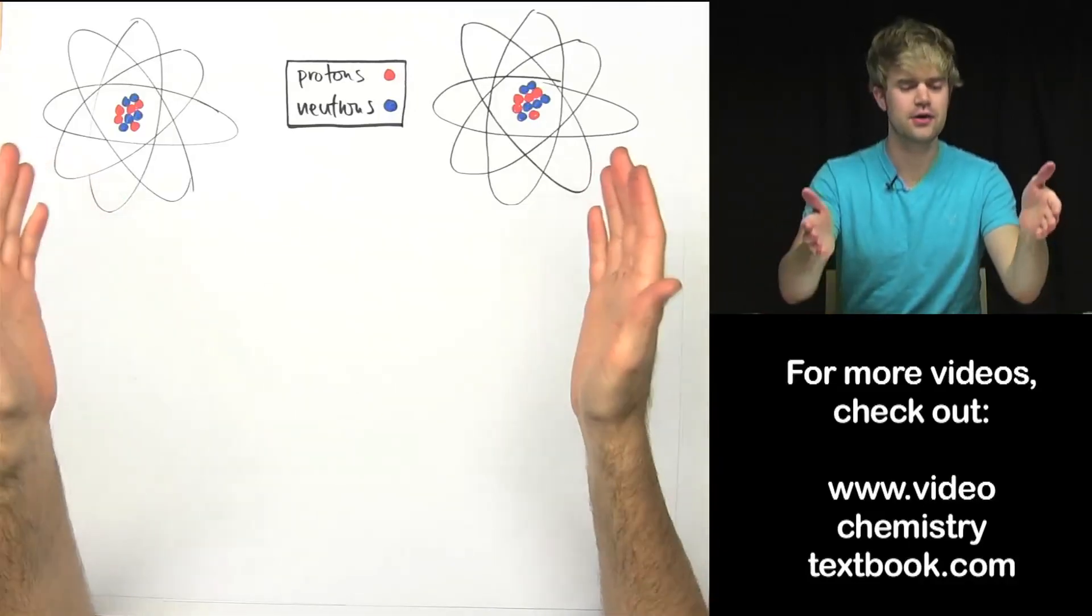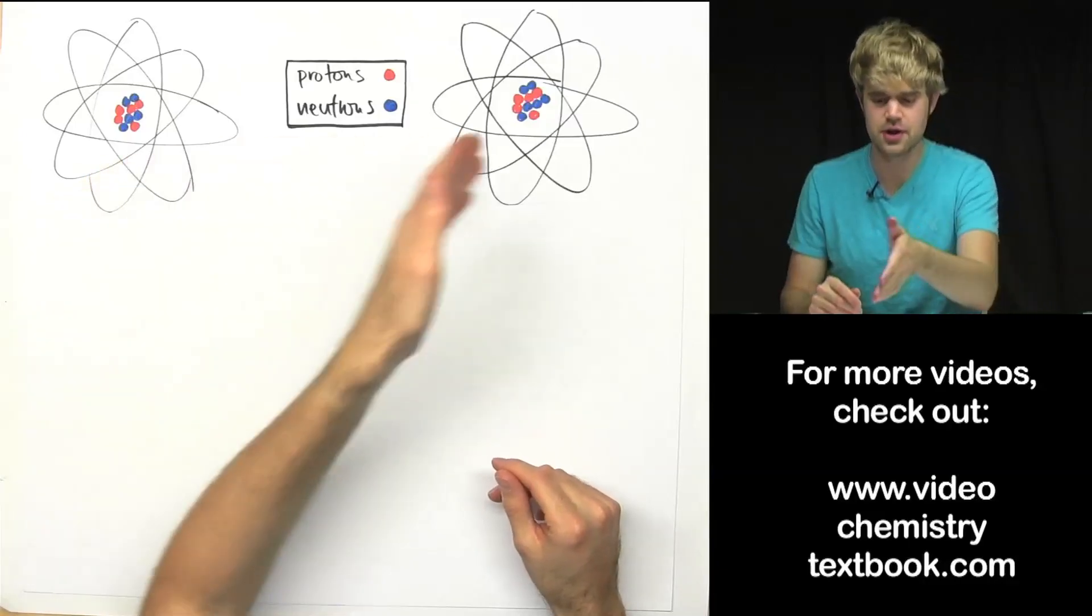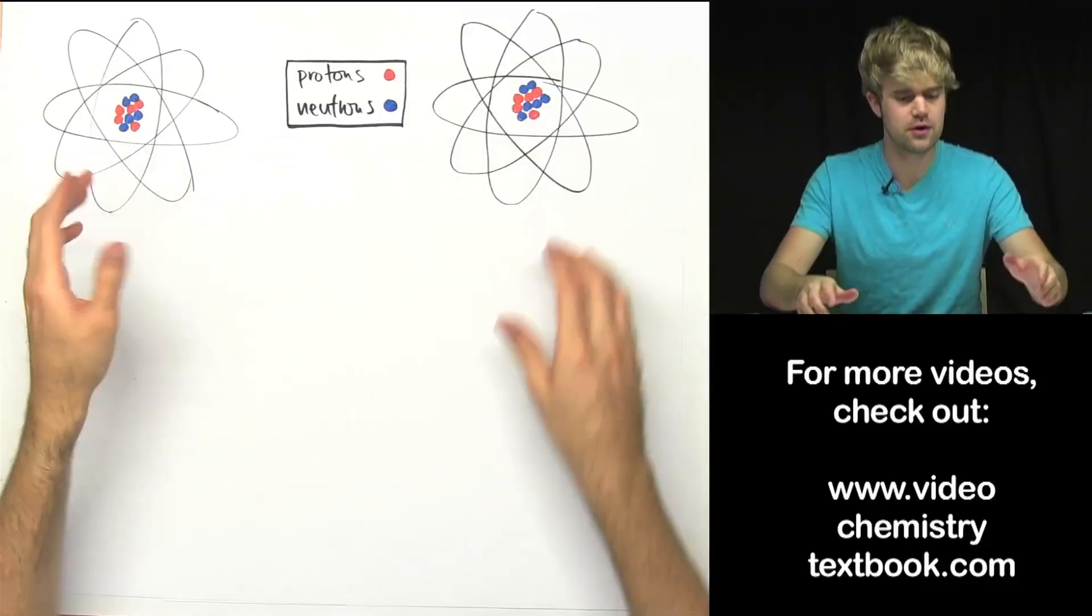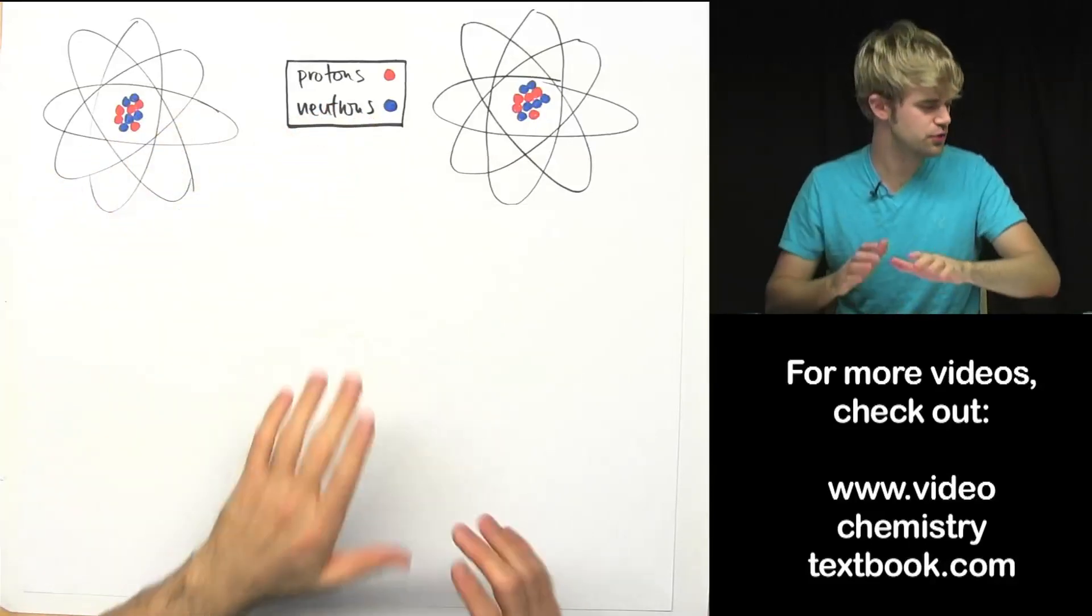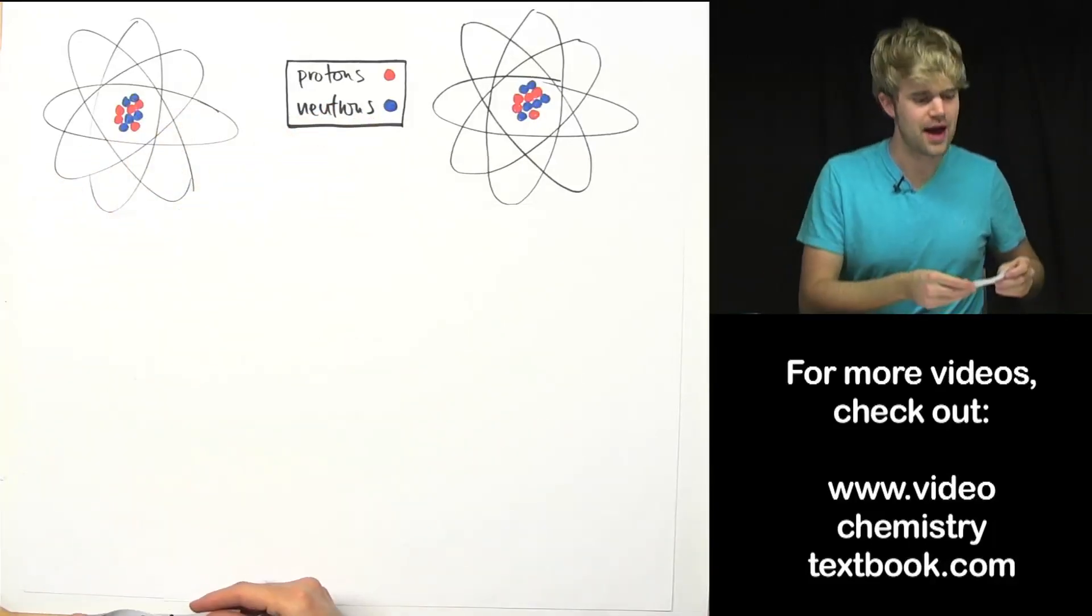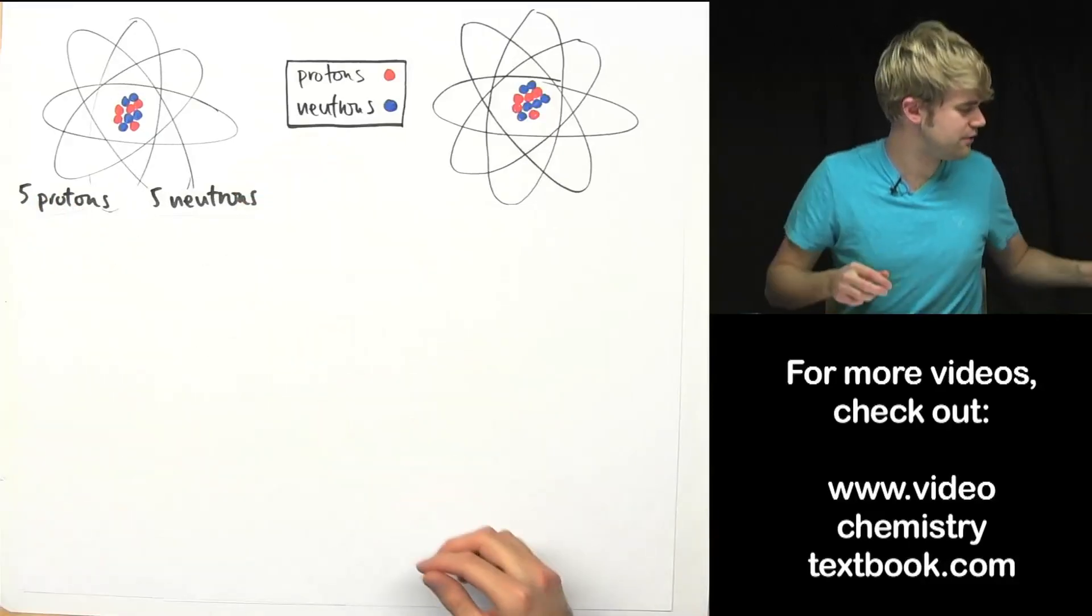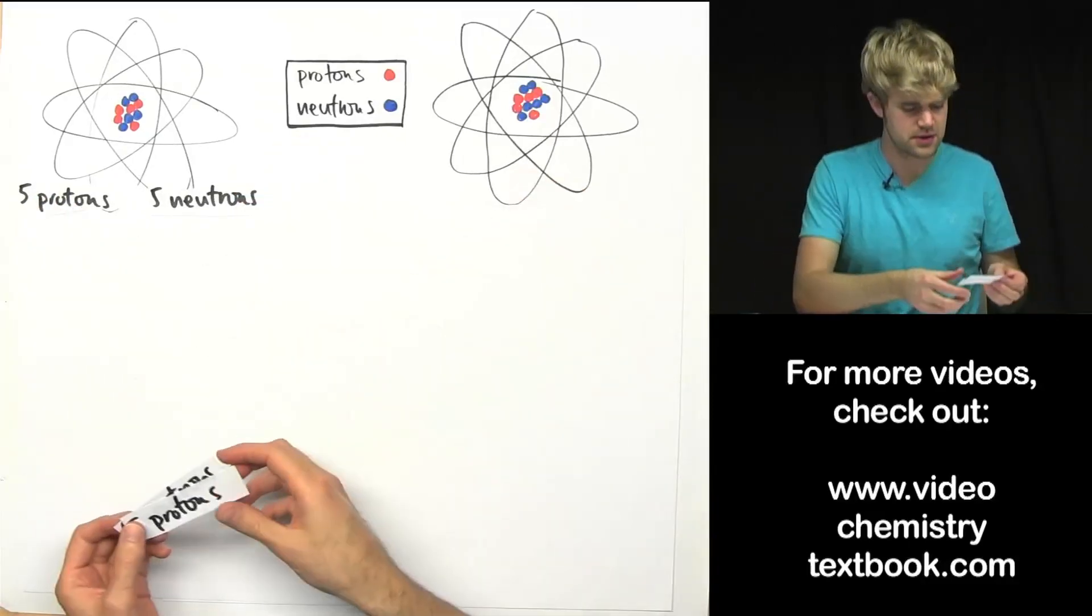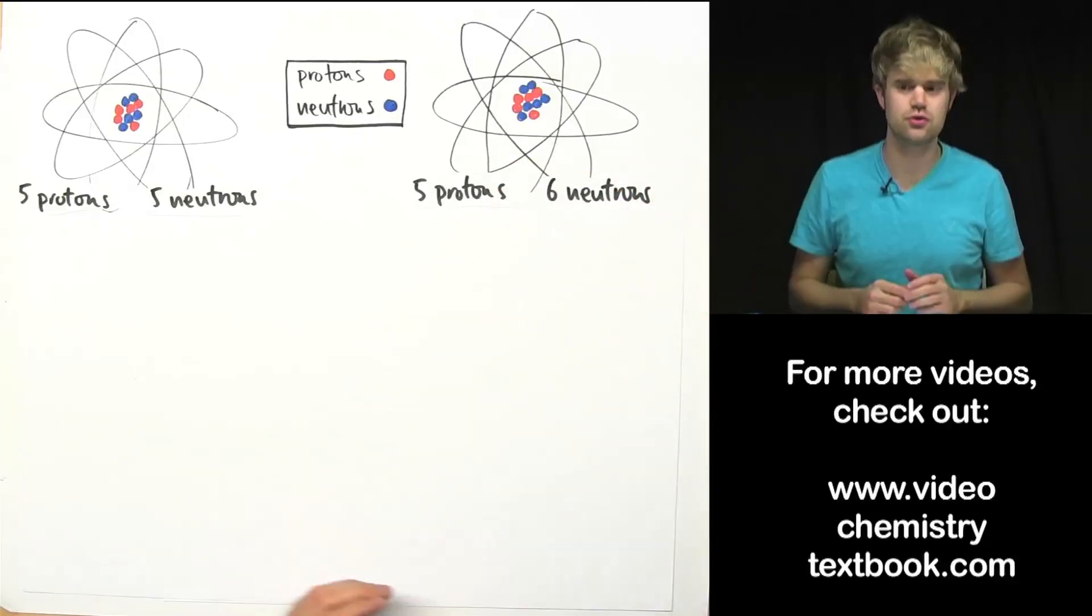So up here I got two atoms and I'm particularly interested in the number of protons and neutrons that are in the nucleus of both these atoms. So the protons are red, the neutrons are in blue, we can count them up. The atom over here has five protons and five neutrons while the atom on this side also has five protons but has six neutrons.